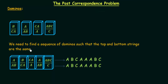To cancel out the extra CA, we need to find a domino that has CA on top — that is the third domino, CA over A. Now on top we have ABCA and on the bottom we have ABCA, but with an extra A in the denominator. To handle this extra A, we use a domino with A on top — that is domino 2 again: A over AB. Now we have an extra AB at the bottom, so we use the domino ABC over C.